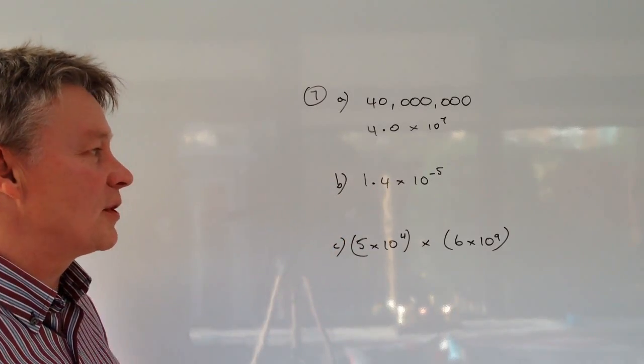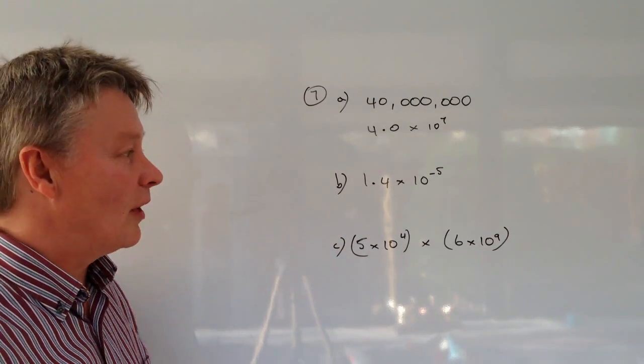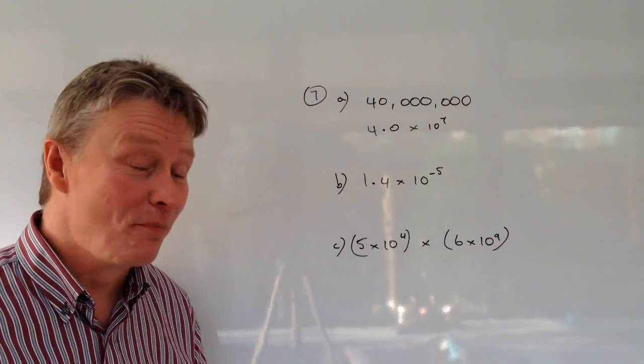This one is question B which is 1.4 times 10 to the power of minus 5. Write that in a normal number as they call it.